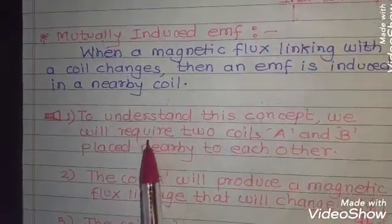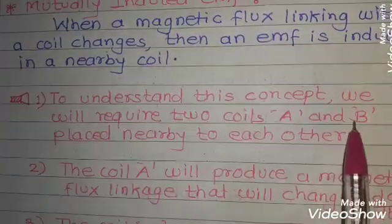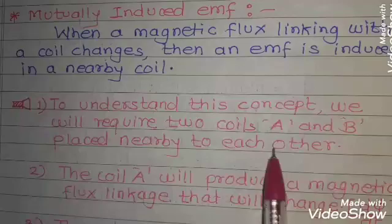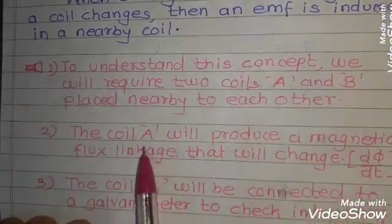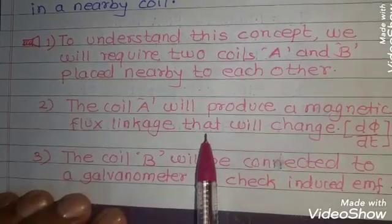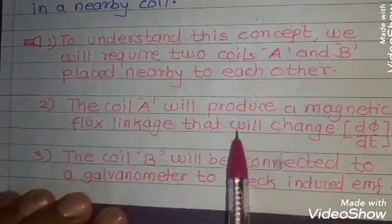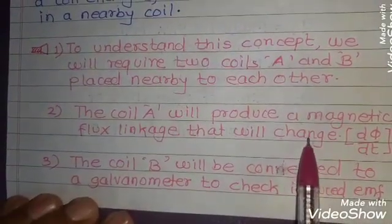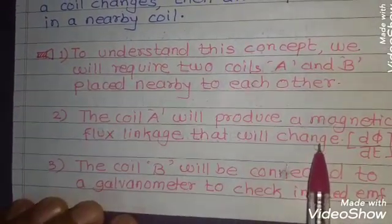First, we will require two coils A and B and they must be placed nearby to each other. Secondly, the coil A will produce magnetic flux that will link with another coil and that magnetic flux linkage must have the change in it.